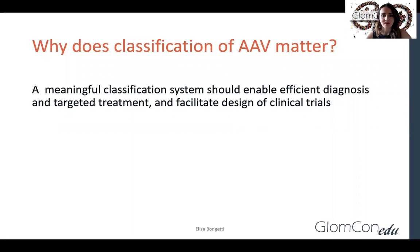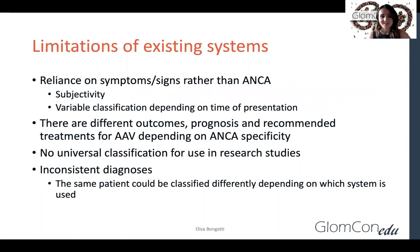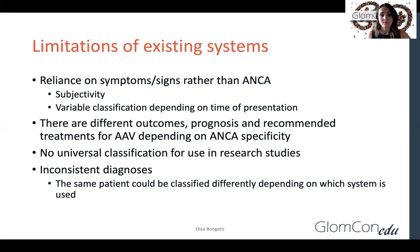Today I'm going to talk about classification of small vessel ANCA-associated vasculitis. A meaningful classification system needs to enable us to make an efficient diagnosis and provide targeted treatment to facilitate care in our patients, as well as a system that can be used in clinical trials. The limitations of existing systems is that we rely heavily on signs and symptoms rather than ANCA specificity, which can create issues due to the significant overlap in symptomatology between the various vasculitides and can also cause subjectivity in diagnosing patients. This is important because there are different outcomes of prognosis and recommended treatments depending on ANCA specificity, and current systems don't reliably incorporate that into classification. In addition, there is no universal agreed-upon classification system that we currently have to make our diagnoses.